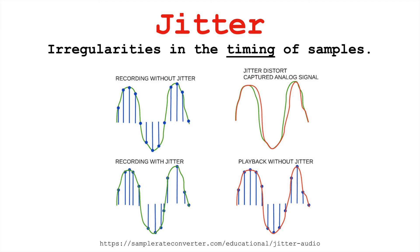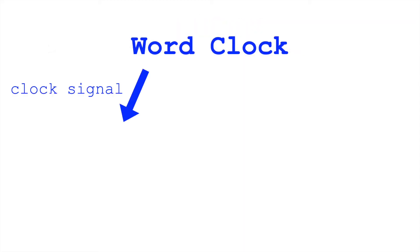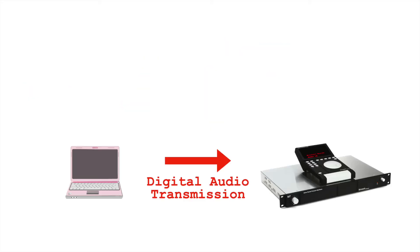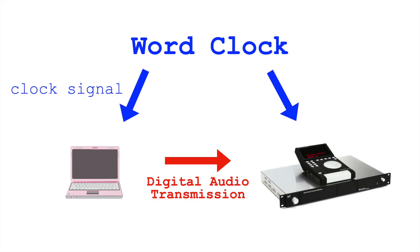To avoid jitter — these irregularities that might cause some distortion of our sound — first, we want a good word clock, and secondly, we want a single word clock to coordinate the timings of this sampling across our systems. If I'm sending out to a digital reverb, I want that reverb to have the same timing as the audio interface I'm sending out to it, to avoid these two clocks being out of sync.